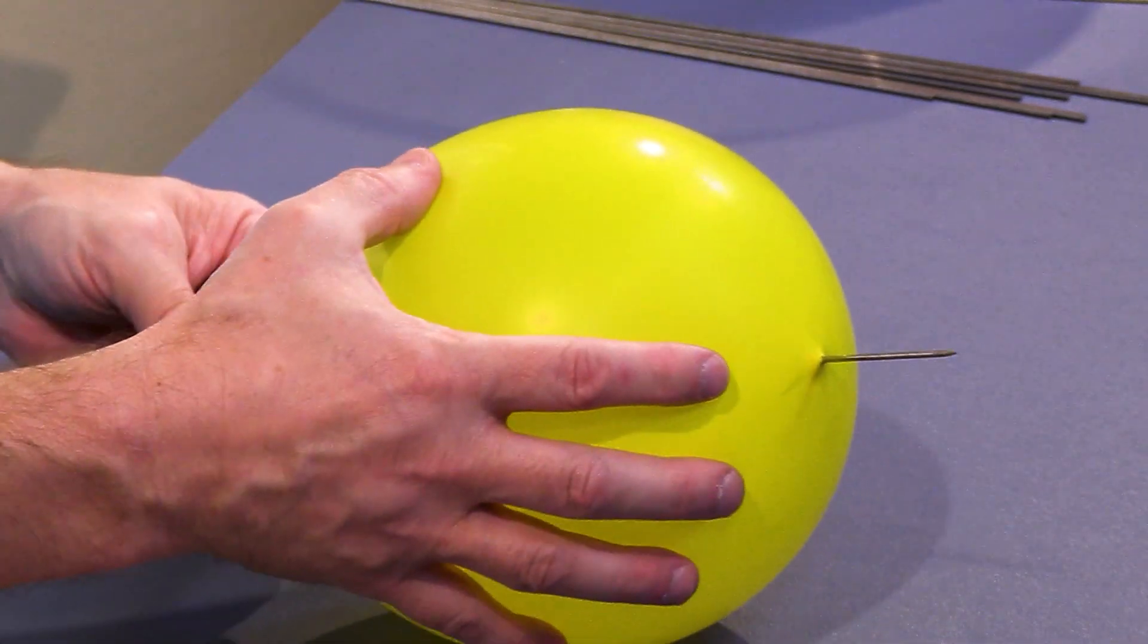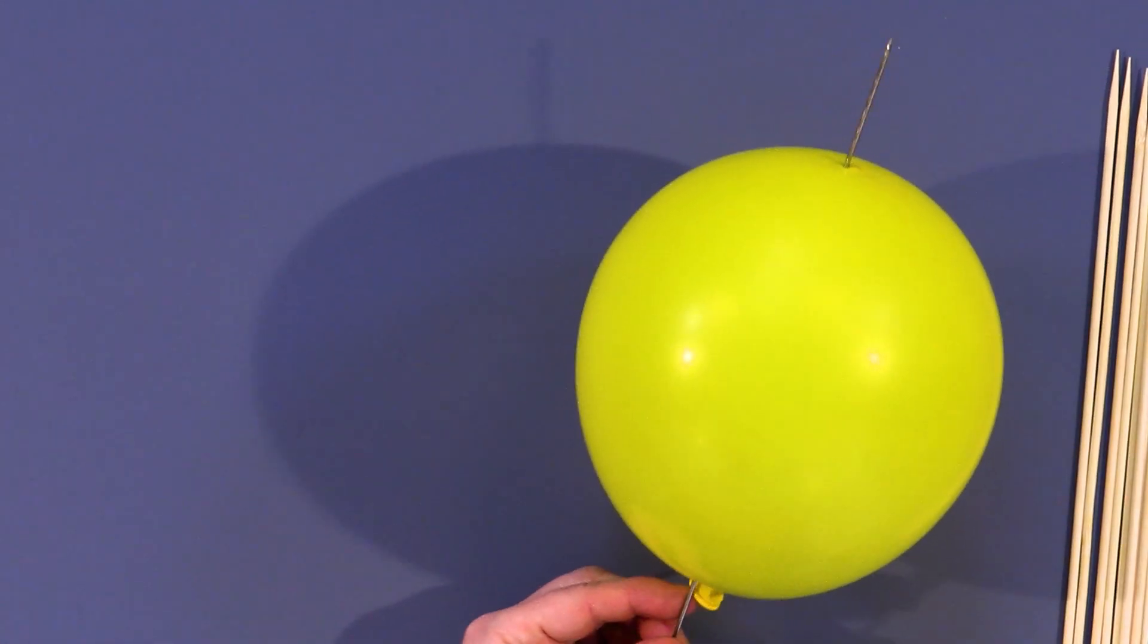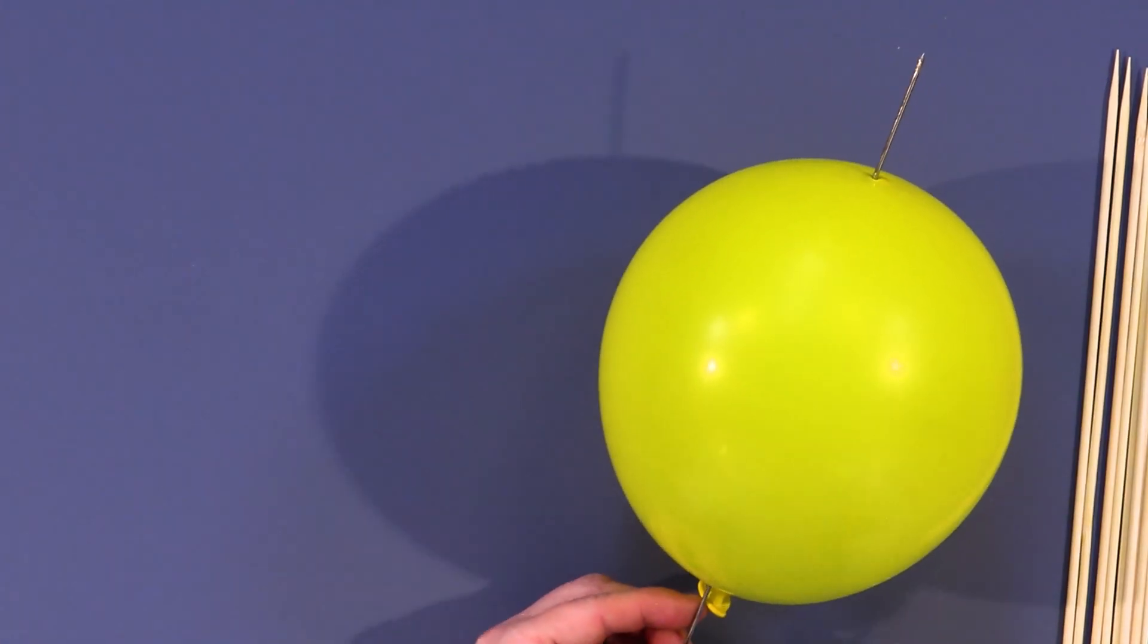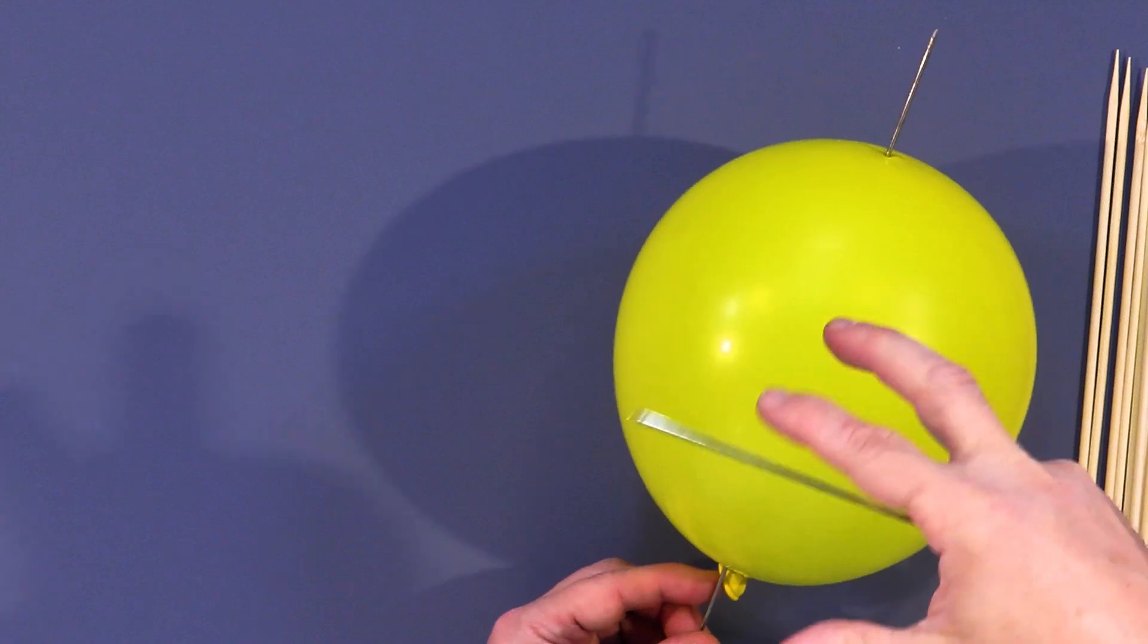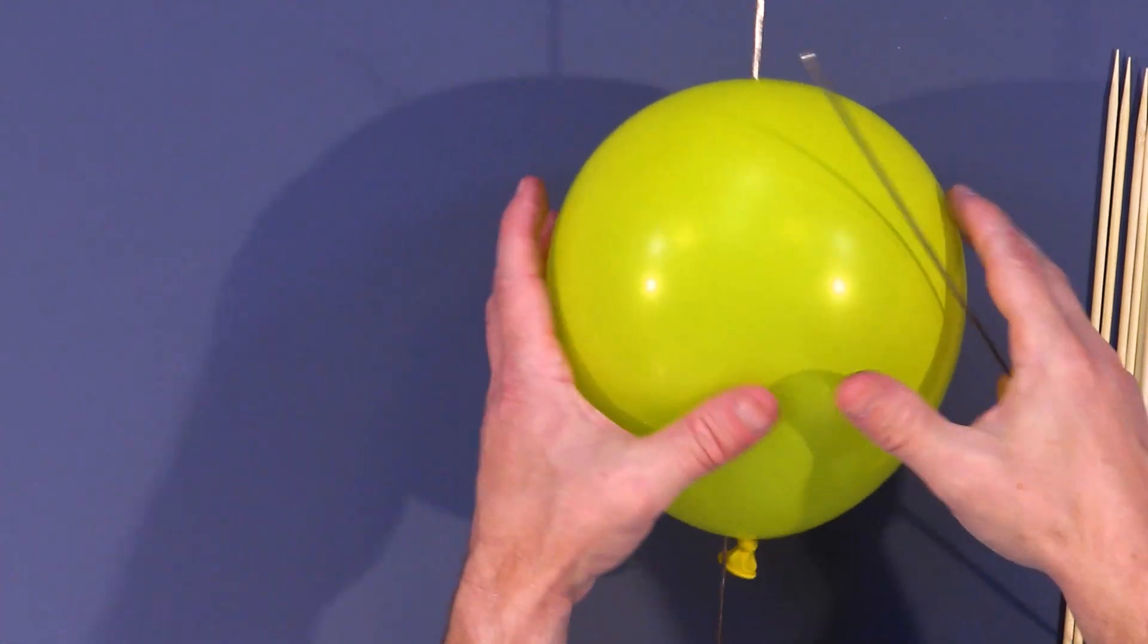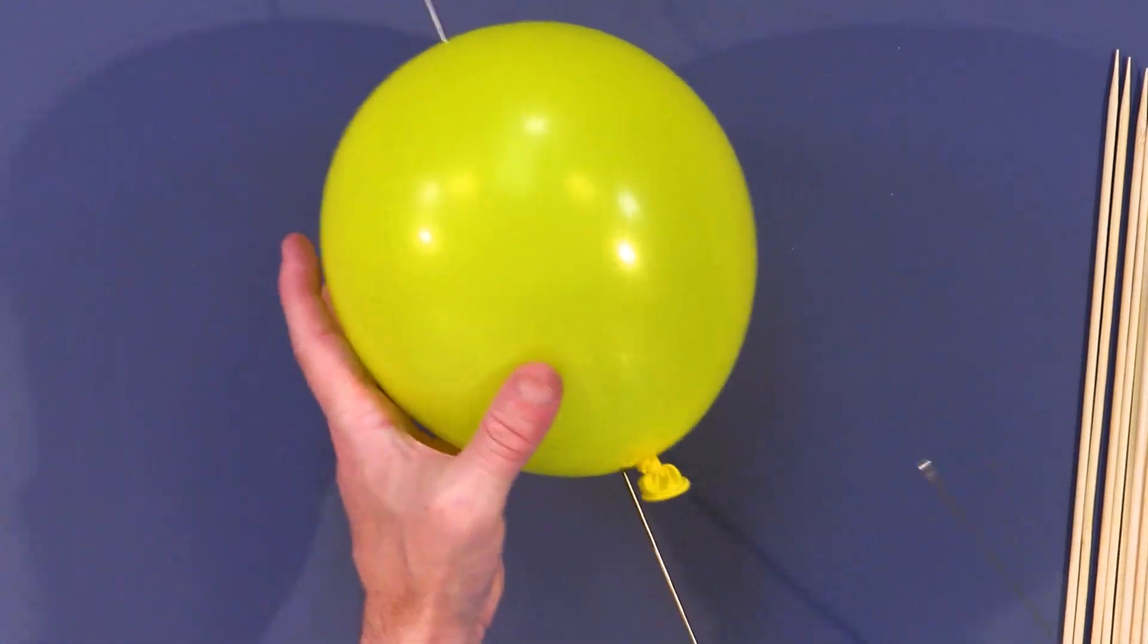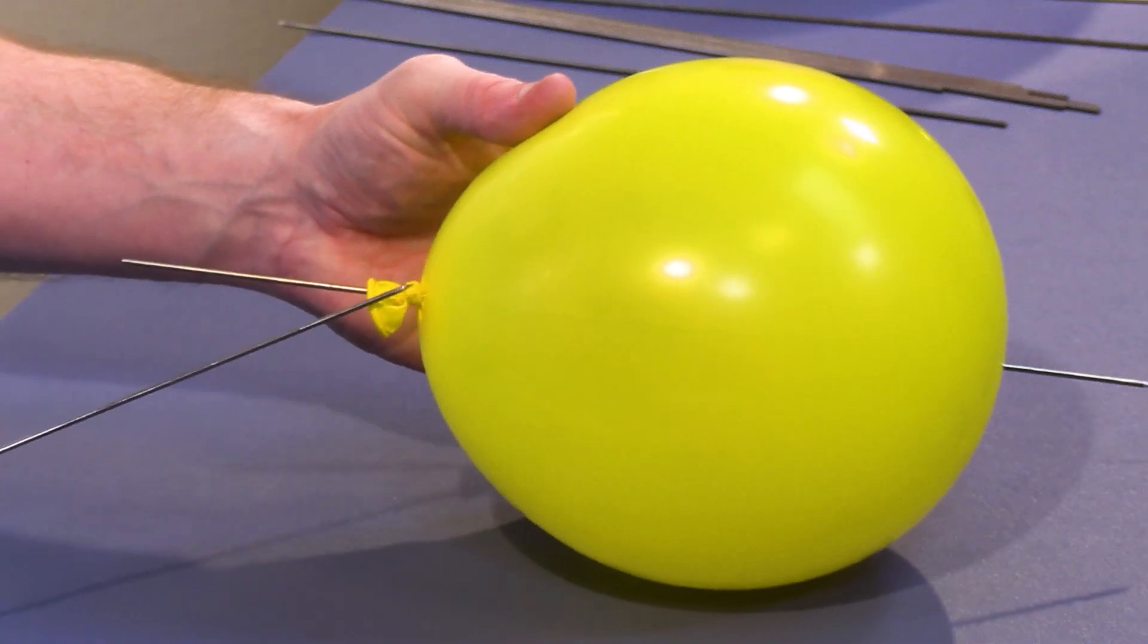We have a skewered balloon there, right? Now, before we run out of air, notice it's not deflating too much. Why? Because the pressure and the tension in the rubber is kind of holding it and keeping the holes kind of closed there, as long as you do it with a very narrow object here.